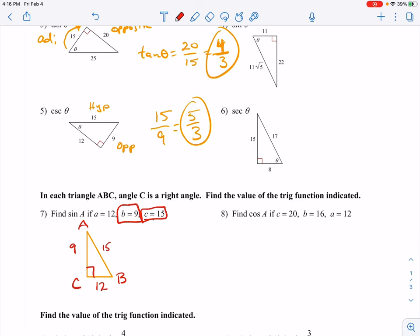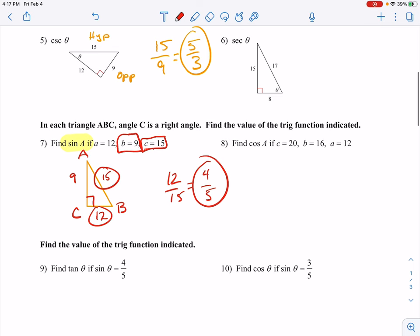They're asking us to do the sine. Let me highlight this. The sine of A. The sine of A would be the opposite over the hypotenuse. 12 over 15, which is 4 fifths. That would be 4 over 5, 4 fifths. If you can simplify your fractions, you should. You guys do number 8.